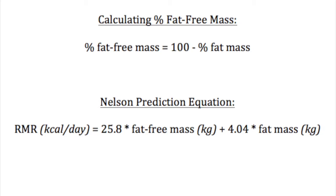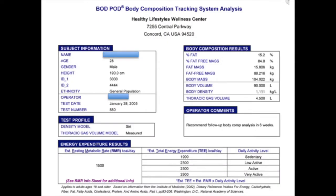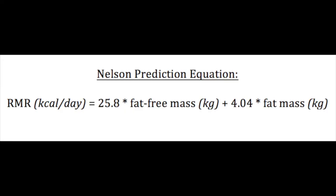After the procedure is over, the Bod Pod gives you a printout of all this information. It even tells you your resting metabolic rate, which is the minimum calories your body needs to intake in a day to maintain all of your bodily functions. The Bod Pod uses the Nelson prediction equation: RMR equals 25.8 times fat-free mass in kilograms, plus 4.04 times fat mass in kilograms. Each kilogram of lean mass and fat mass have known metabolic needs — these are the constants 25.8 and 4.04.